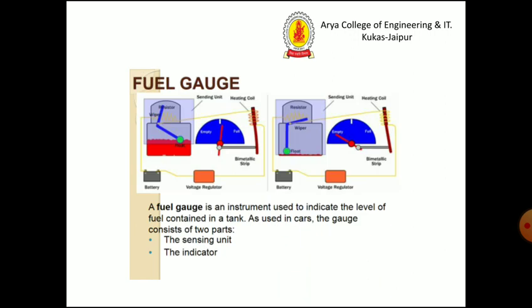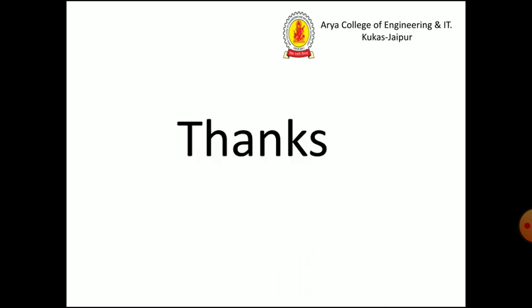A fuel gauge sensor is an instrument used to indicate the level of fuel contained in the tank. The indicator units are shown in the vehicle's dashboard, covering different electronic systems used in the vehicle.